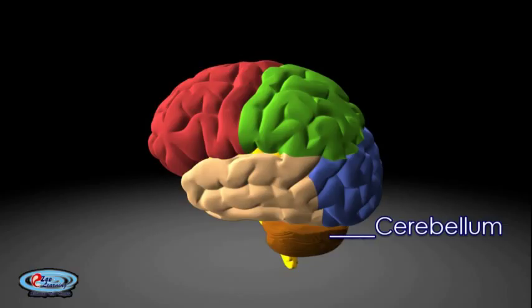The cerebellum is located at the bottom of the brain with the large mass of the cerebral cortex and the portion of the brainstem called the pons in front of it. It is separated from the overlying cerebrum by a layer of dura mater. All of its connections with other parts of the brain travel through the pons.